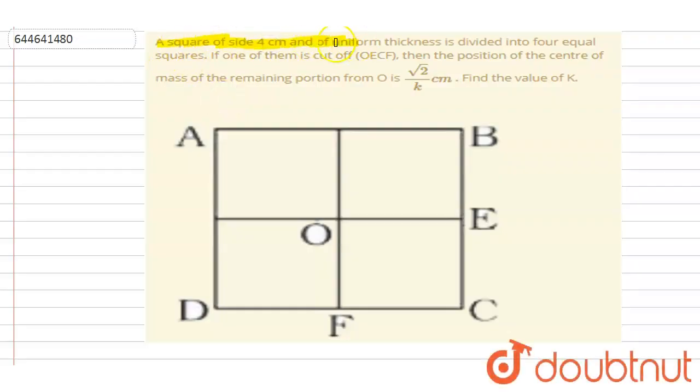A square of size four centimeters of uniform thickness is divided into four equal squares. One of them is cut off. The portion of the center of mass of the remaining from O is at a distance of root 2 by k. Then find out the value of k.